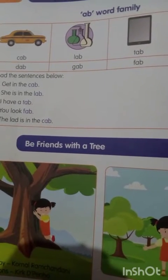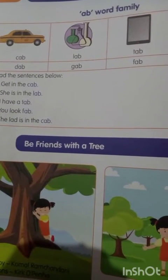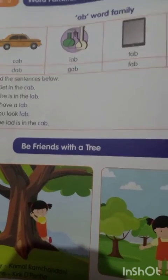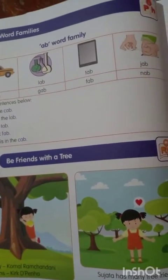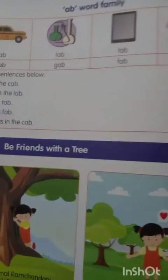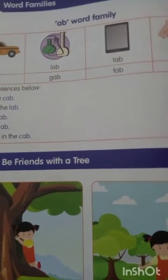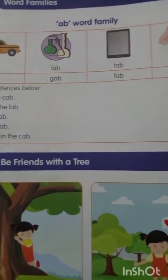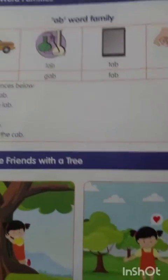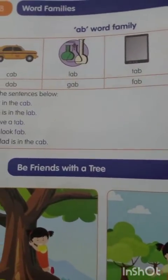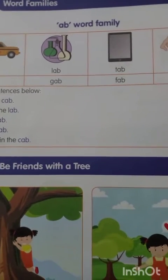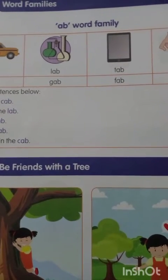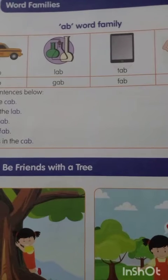Next lesson we are going to learn: 'Be Friends with the Tree.' You all have trees in your surroundings, in your home. We will learn this next week. This week we learned only three word families: AM, AP, and AB.